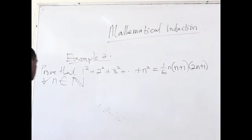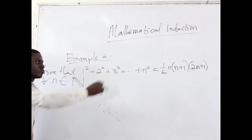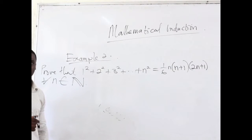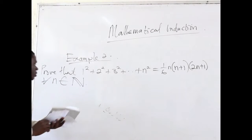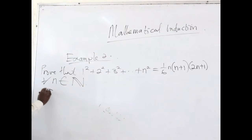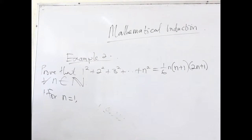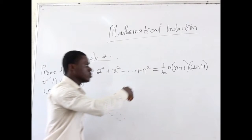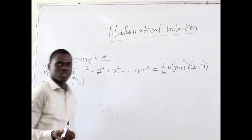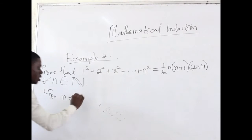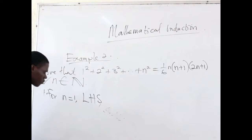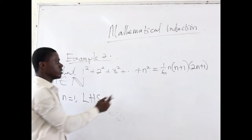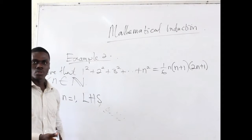The first thing to do is to see whether this statement is true for the first element of the set of natural numbers, which in this case is 1. For n equals 1, we want to see whether the statement is true. We can do that by substituting 1 into the left side. On the left hand side, we put n = 1, so we have 1 squared, which is equal to 1.